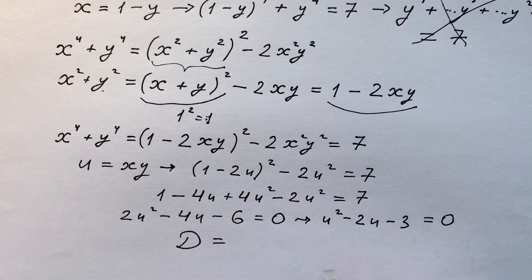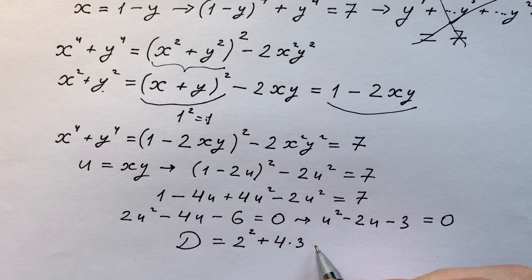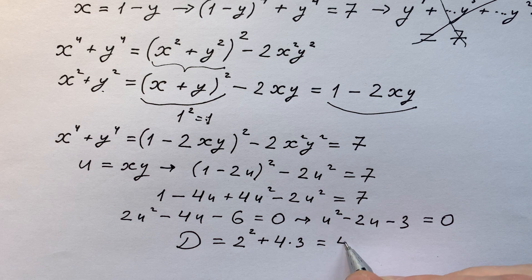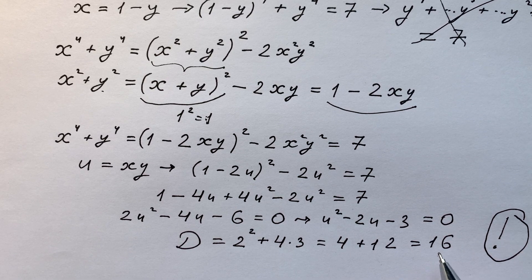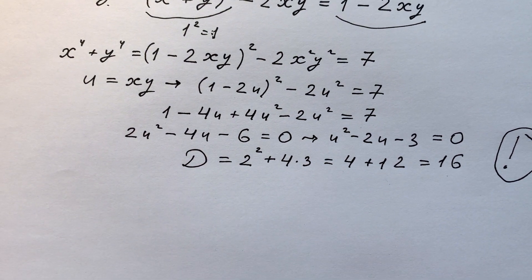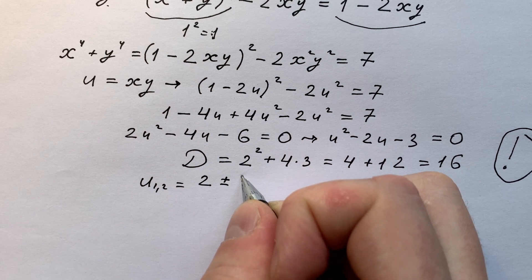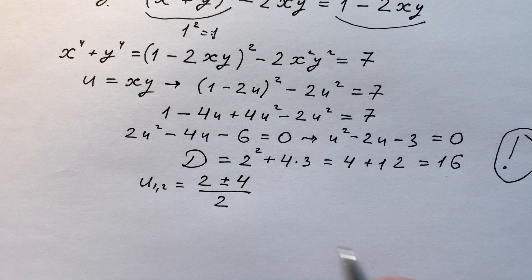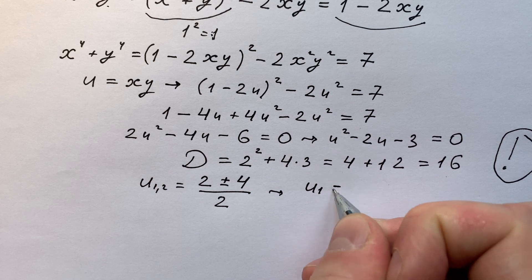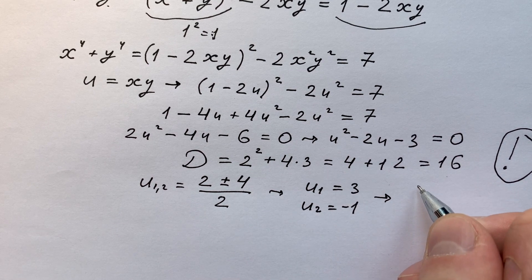The discriminant is really easy: 2² plus 4 times 3 equals 4 plus 12, which equals 16 — and that's a perfect square! So u equals (2 plus or minus the square root of 16) divided by 2, which gives u equals (2 ± 4) / 2. Therefore u₁ equals 3 and u₂ equals minus 1.